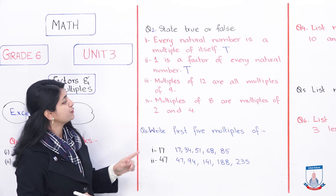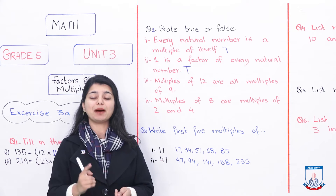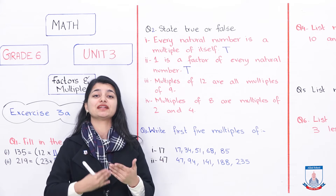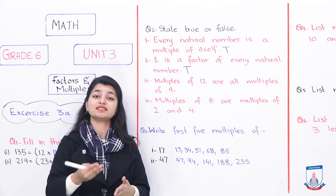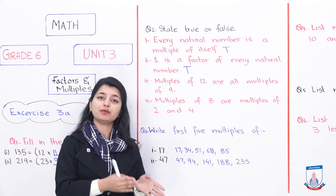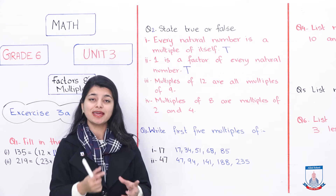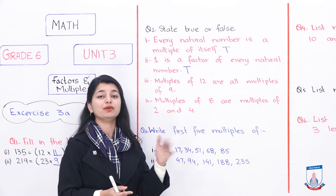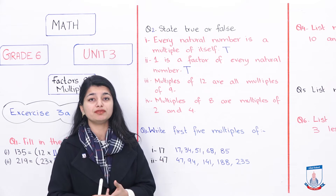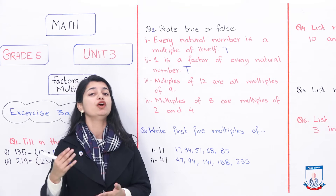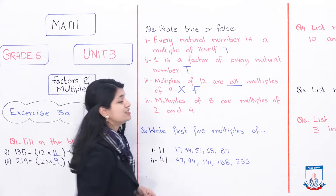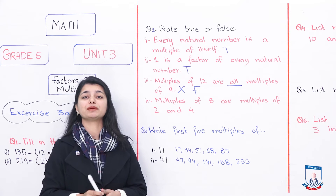The third statement: multiples of 12 are all multiples of 9. You need to recall the table of 12: 12, 24, 36, 48, 60, 72. Then check the table of 9: 9, 18, 27, 36. Is 36 also a multiple of 9? Yes. Is 48 also a multiple of 9? No, it's not. So not every multiple of 12 is a multiple of 9 — this is false. Some numbers are common to both, but not all multiples of 12 are multiples of 9.